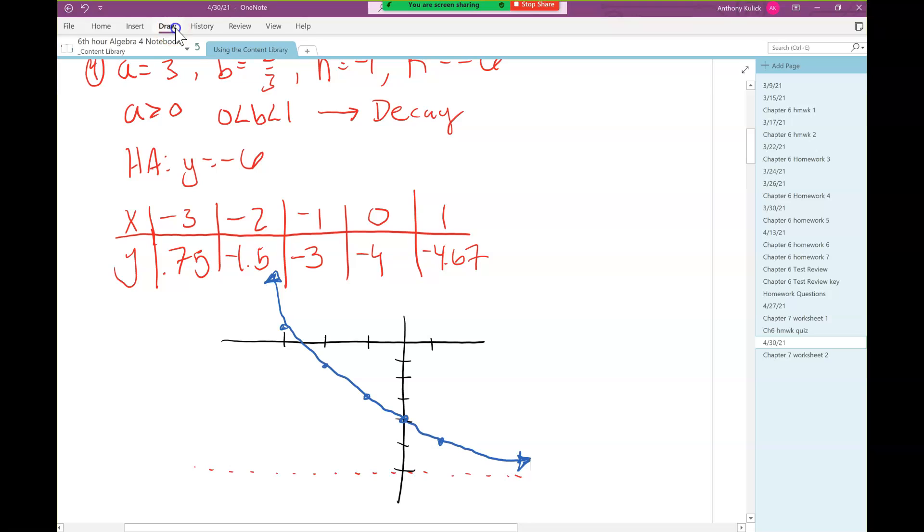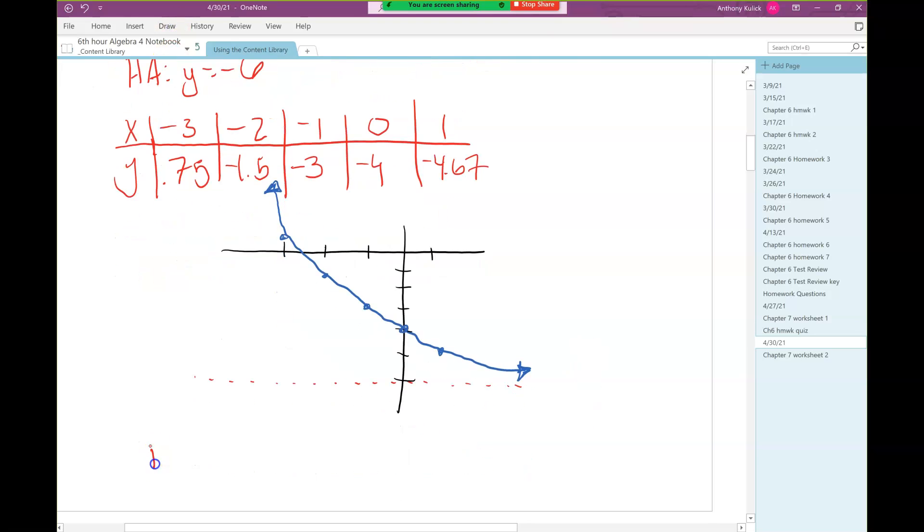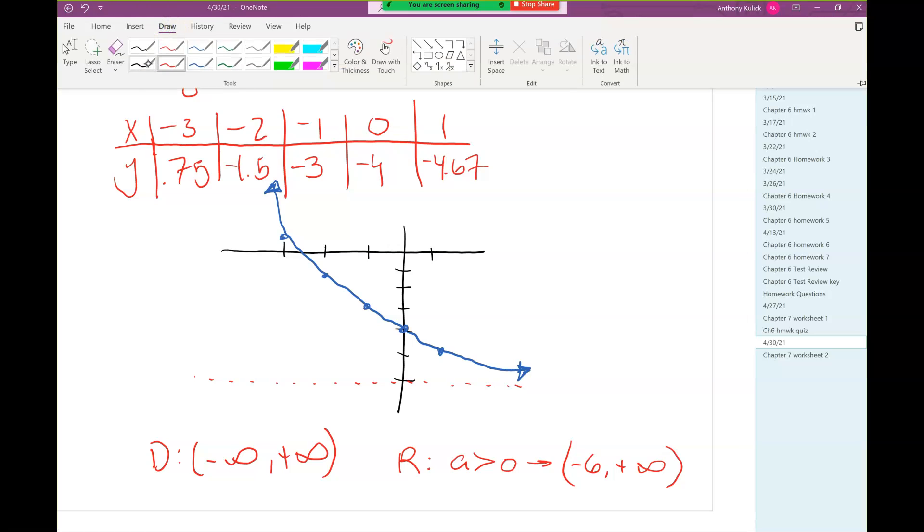So it looks something like that. The last part asks for the domain and range. For all exponential functions, the domain is all real numbers. The range depends on a and k. Since a is positive, the range is going to go from k to positive infinity.